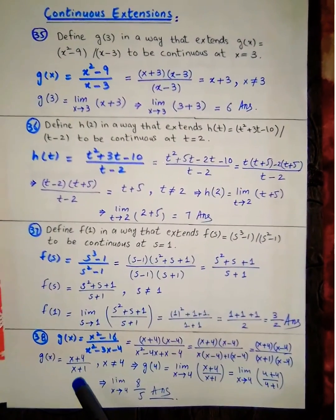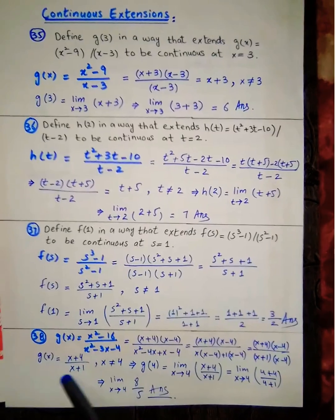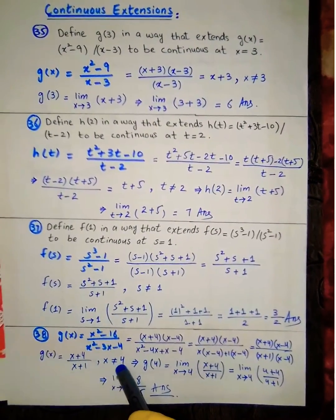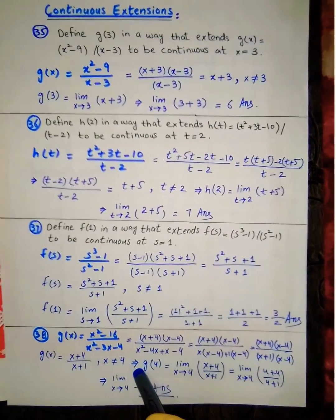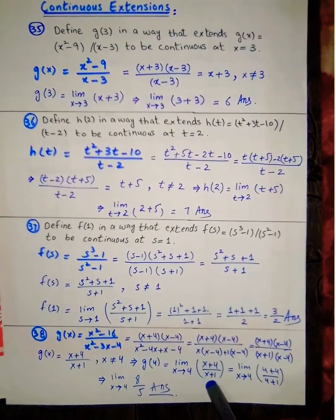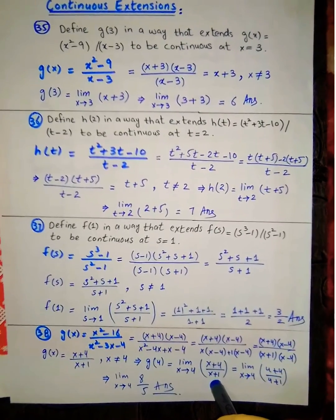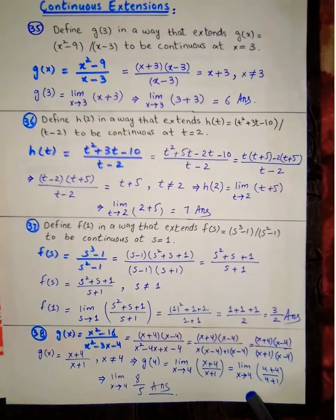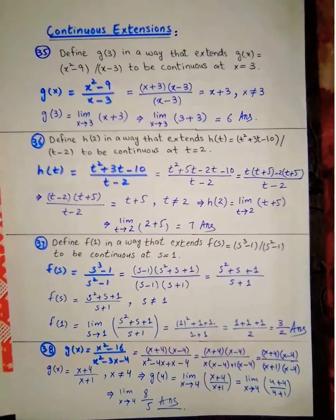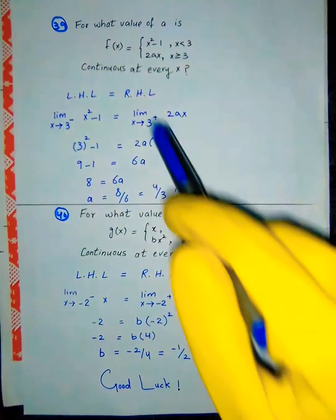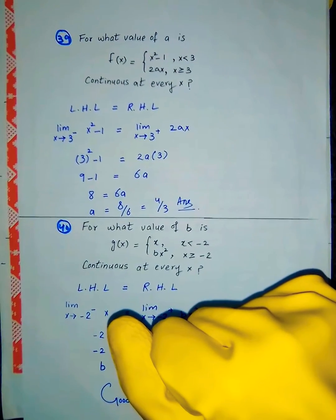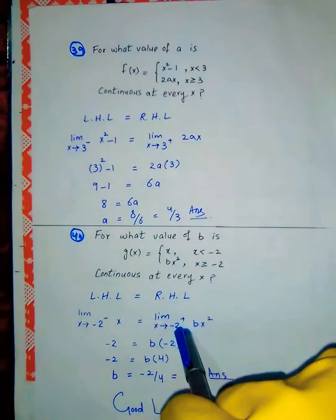After cancellation, g(x) = (x + 4)/(x + 1), where x is not equal to 4. Applying the limit at x = 4 gives the final answer.